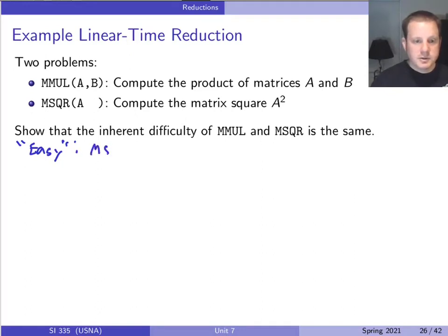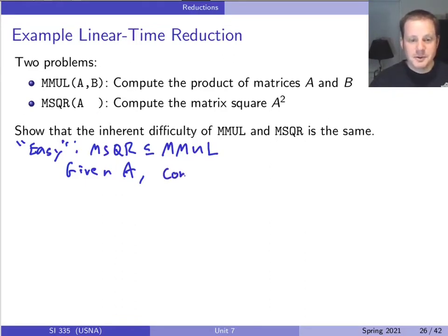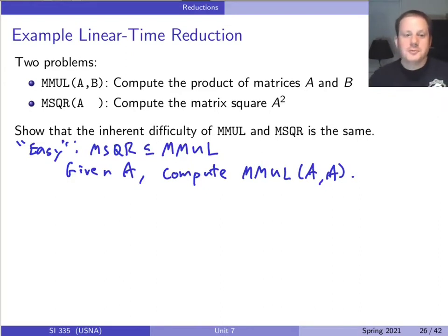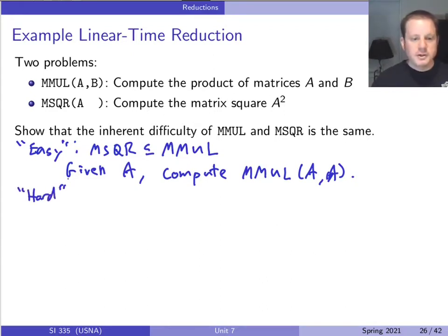So the easy reduction is going to be saying that matrix squaring reduces to matrix multiplication. Given input matrix A, how would we solve the problem of computing A squared by using matrix multiplication? We just compute MatMul(A, A) — done. This is just saying that if all we knew how to do was multiply matrices, we could definitely square a matrix by just multiplying it by itself. Maybe you have to make a copy of it, but that one is straightforward.